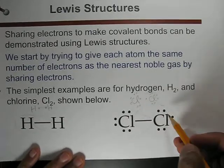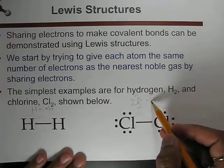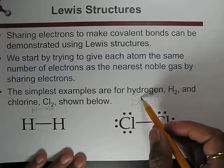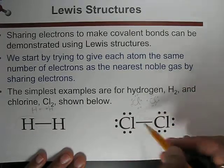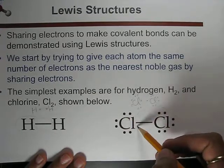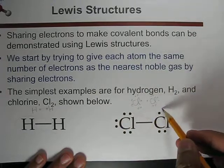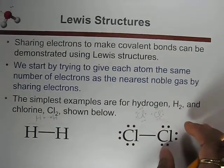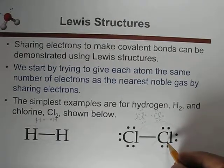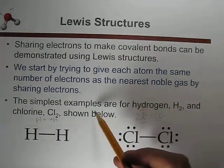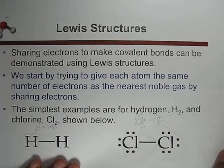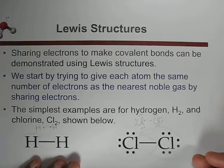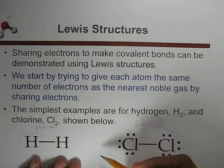When each chlorine shares one electron with the other, their total valence electron count becomes eight — one, two, three, four, five, six, seven, and eight. This gives them the nearest noble gas electron configuration, maintaining the octet. The octet means eight electrons. Hydrogen is an exception because it has only one electron in the covalent bonding.